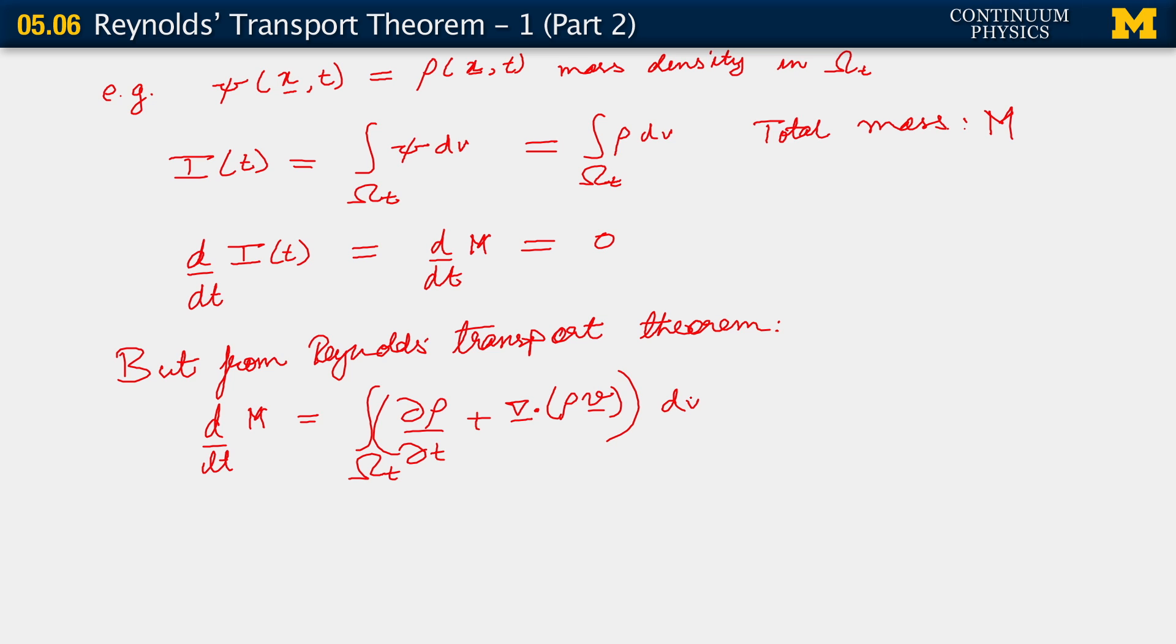In the previous segment, the quantity in parentheses here was, so to speak, the left-hand side of our conservation of mass equation. And we demonstrated there through other means, by considering what happens with the reference density, that this quantity in parentheses that forms the integrand of this right-hand side is actually identically zero.